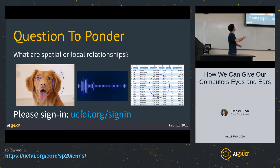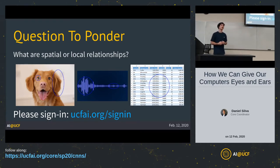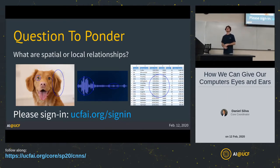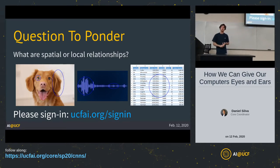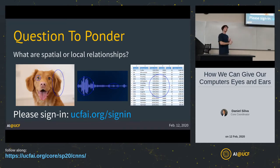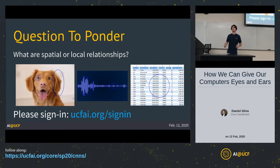In image data, audio data, and all types of unstructured data, what we want to find are local or spatial relationships behind the data. Tabular data — what we worked with last week — is called structured data. Each feature in a row has a real-world interpretable meaning and each feature is very different from the others, like number of cars, size of bathrooms, etc.